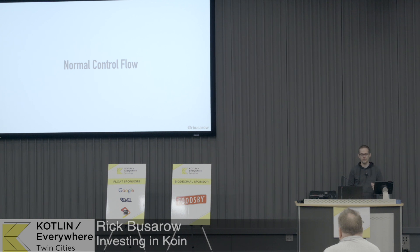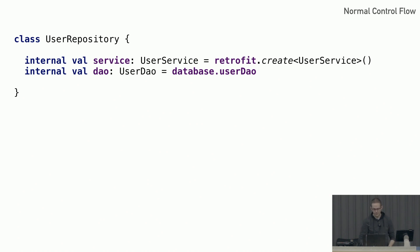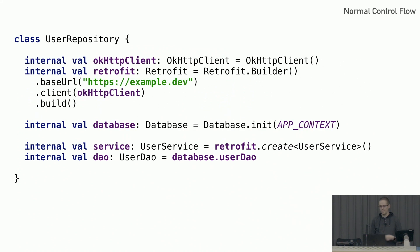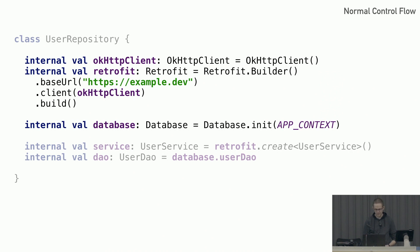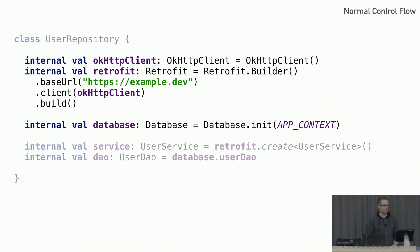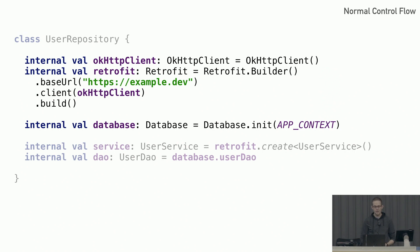Let's look at how we'd build this using normal control flow — which is legacy code. In order to create our repository, we need references to that DAO and that service. But to create them, we need to create all these other classes — the database, the Retrofit instance, and the OkHttp client. This is really expensive. That OkHttp client takes about 150 milliseconds to initialize on a modern Pixel 3. And it's expensive in terms of boilerplate. If you're creating a lot of repositories, you'd be hard-coding this into every single class, creating it over and over again.